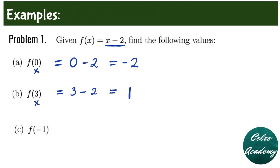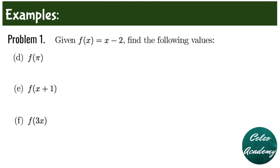Similarly, to evaluate f of negative 1, we substitute negative 1 into the x. So we have negative 1 minus 2, which is equal to negative 3. For question letter D, f of pi — our x value here is pi. So substituting pi into the x, we have pi minus 2.